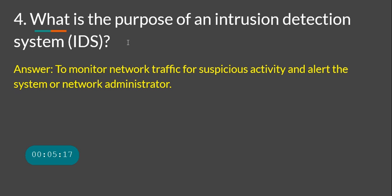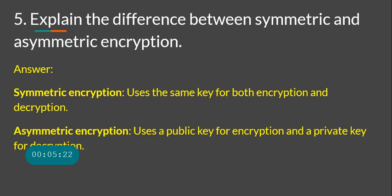Explain the difference between symmetric and asymmetric encryption. In symmetric encryption we use only one key for both encryption and decryption. In asymmetric encryption we use two different keys — one for encryption and a different one for decryption.